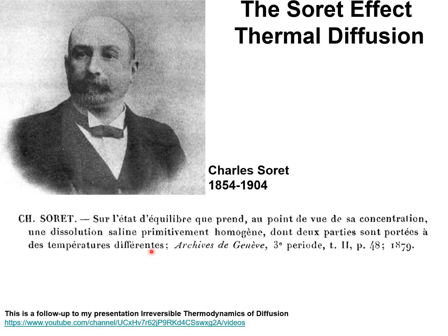Charles Soret, born in 1854 in Geneva, Switzerland, was a Swiss physicist and chemist. He is known for his work on thermal diffusion, also known as the Soret effect.